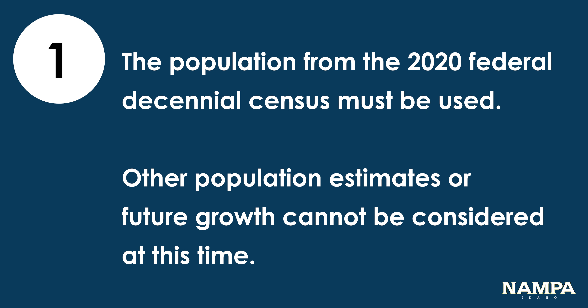Second, the population from each district must be as equal as possible. Per the 2020 Census, the population of Nampa is 100,200. Dividing this number by the six council districts results in an optimal population in each district of 16,700.